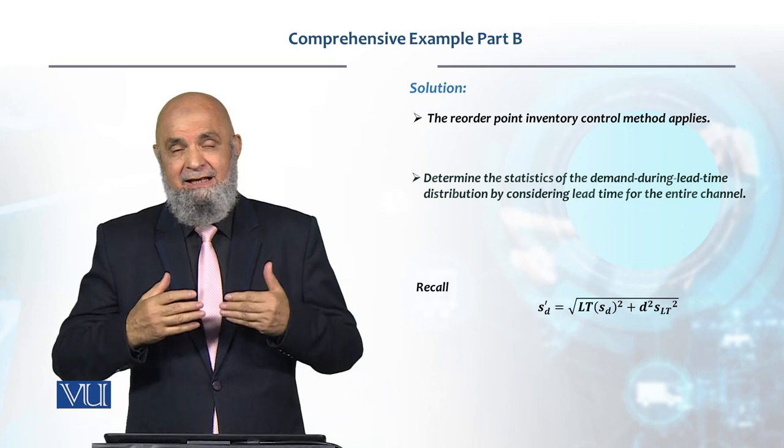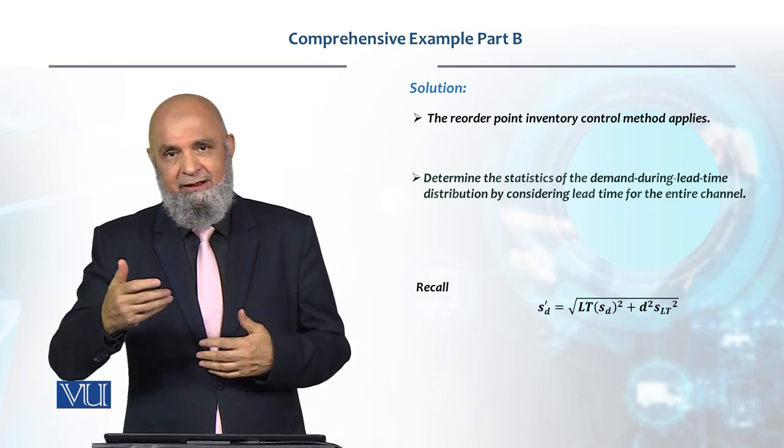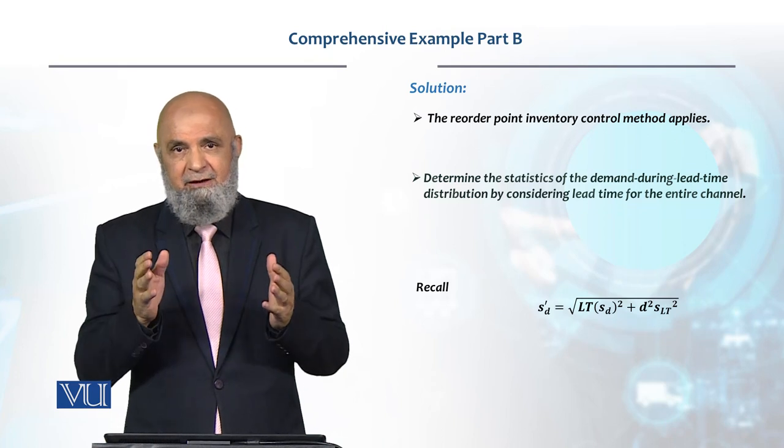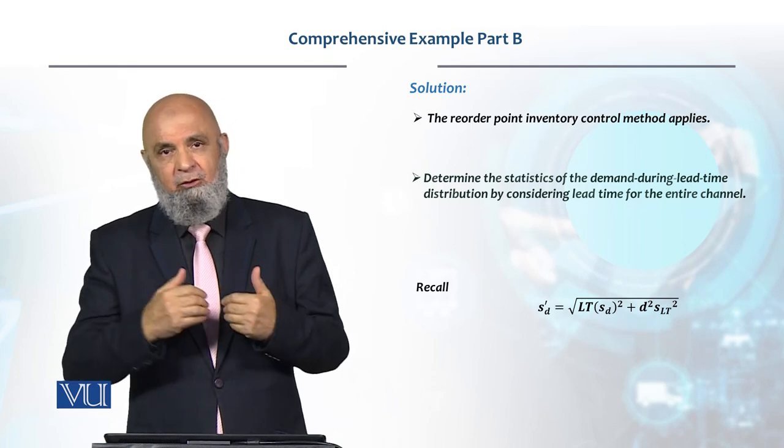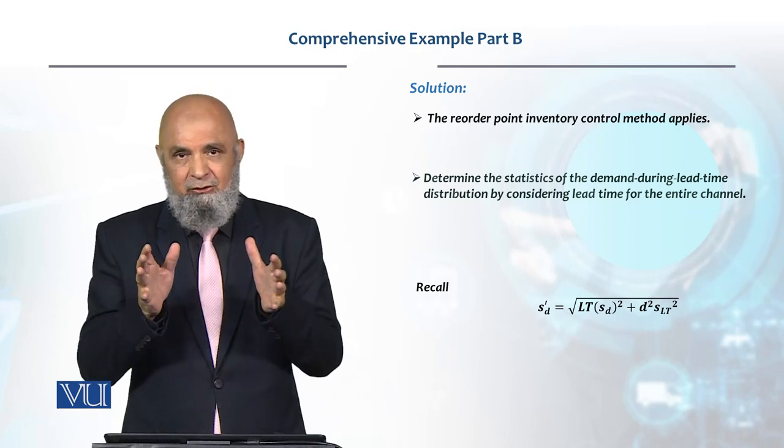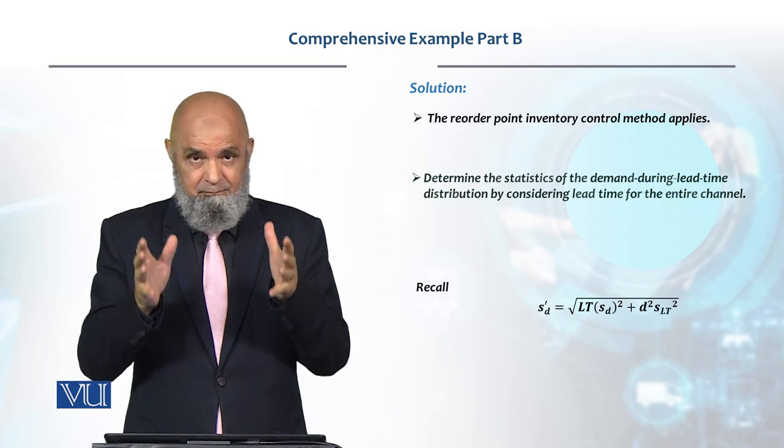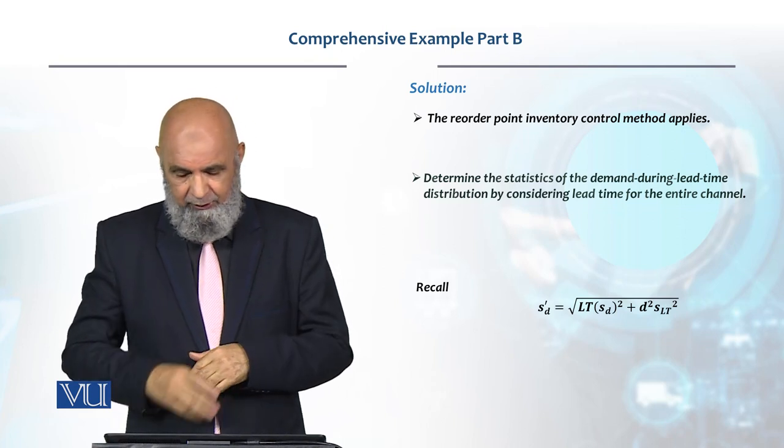We can add variances—square the standard deviations and then sum them, and if we want to convert back to standard deviation, take the square root. That is how you determine the combined standard deviation.